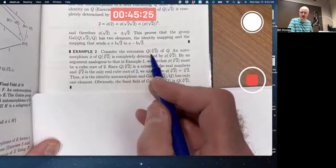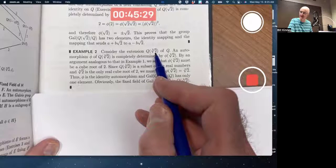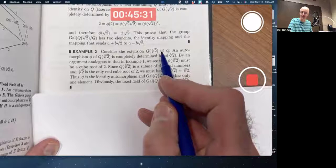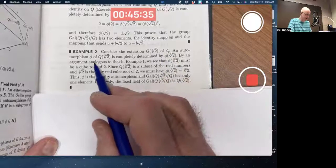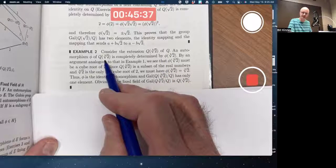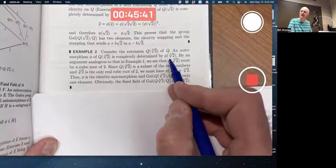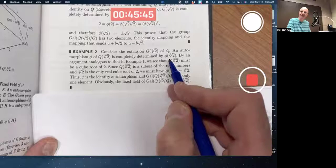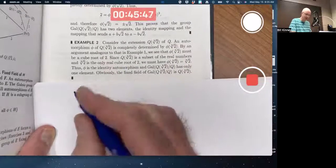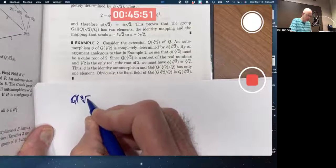Consider the extension Q adjoined cube root of 2 instead of square root of 2 over Q. This time, an automorphism phi of this field extension of Q is completely determined by its value at cube root of 2. Why? Let's think about what Q adjoined cube root of 2 looks like.